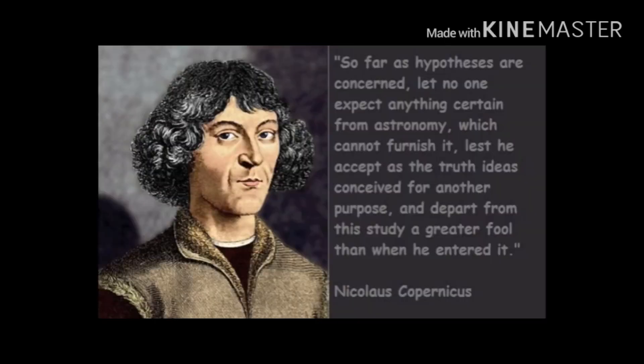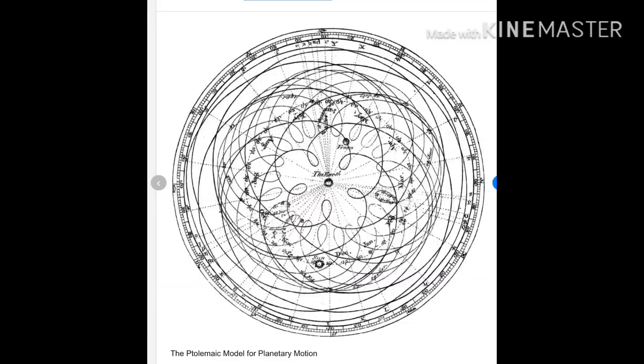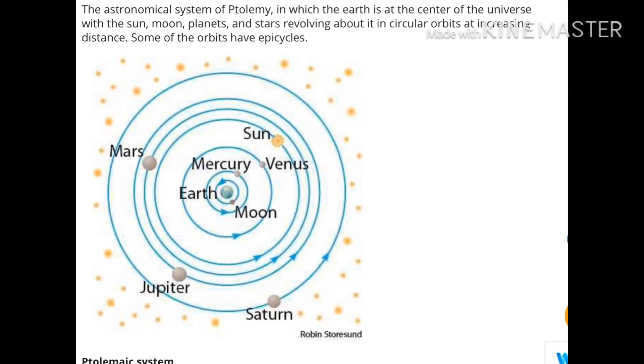Nicholas Copernicus was born in 1473 in Poland. He was a priest and an astronomer. In the 15th century, there was widespread agreement of Ptolemaic theory which says that Earth is the center of the universe.